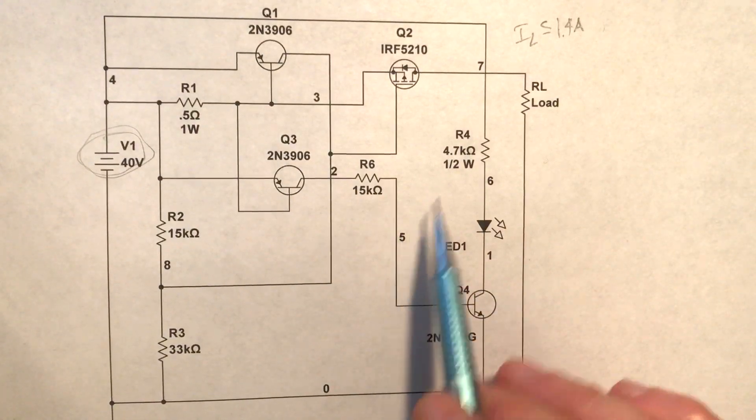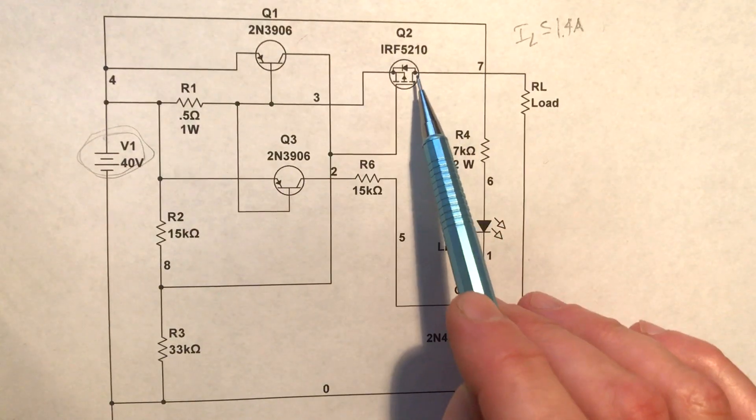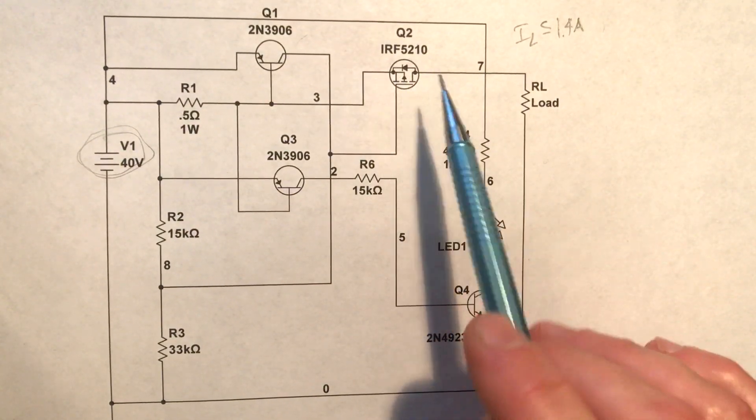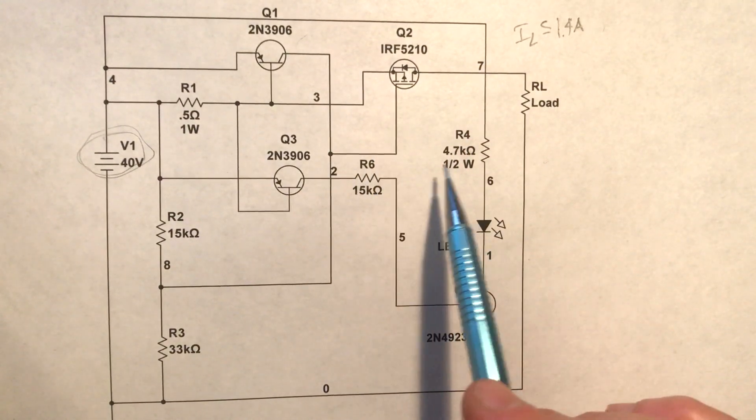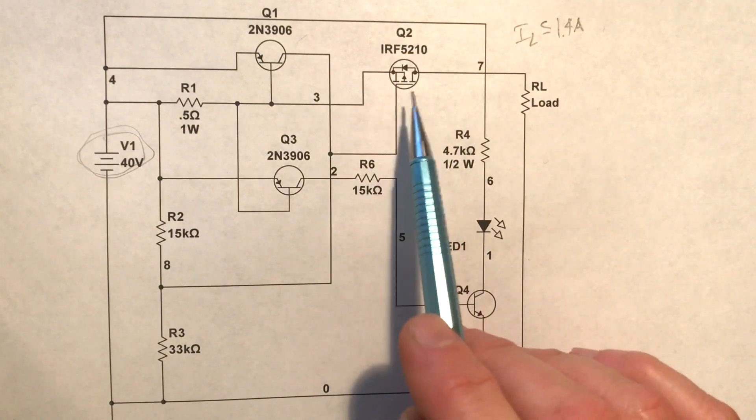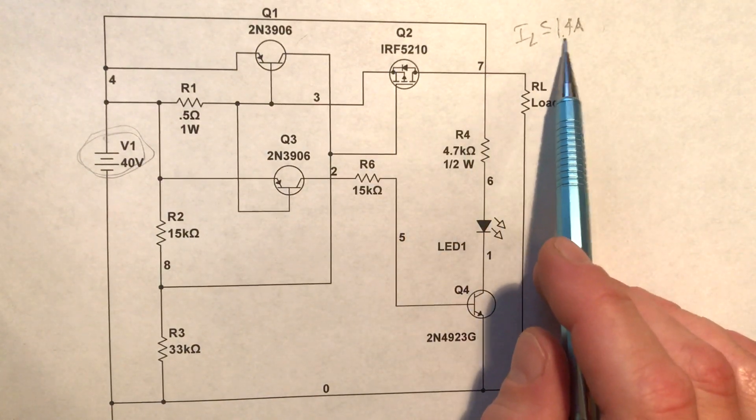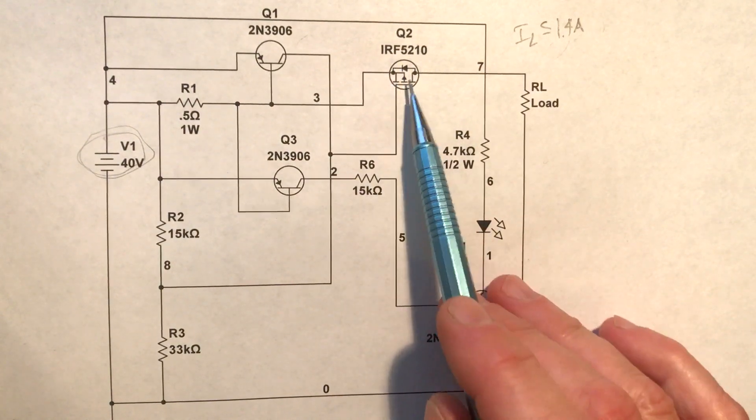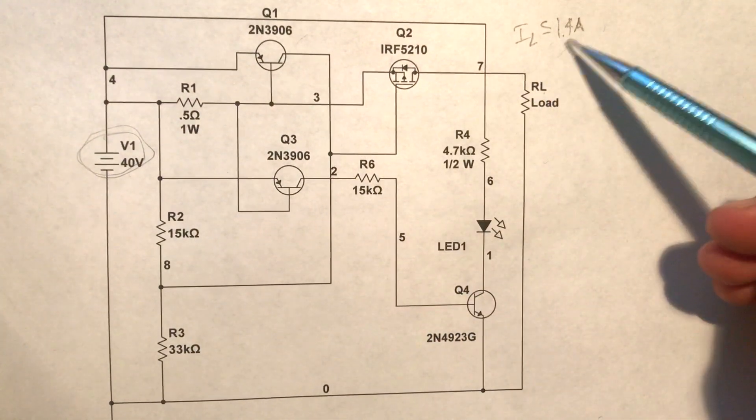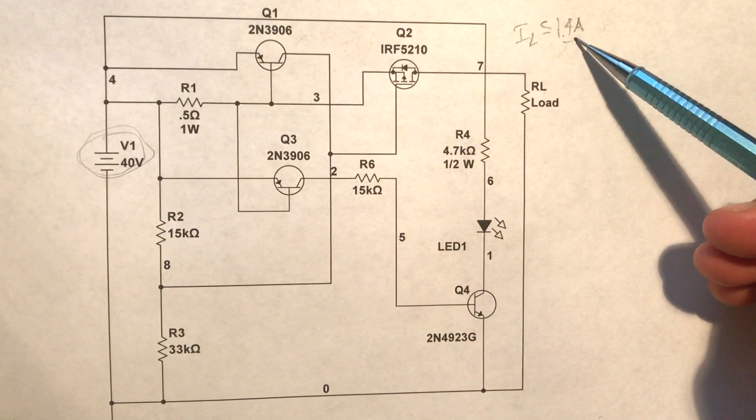Now the gist of this circuit is all centered around this MOSFET obviously. It's a p-channel MOSFET and I've got it operating as a voltage controlled resistance source. So given that, as the current starts to approach 1.4 amps and increases or goes beyond that value, this resistance is going to increase which will in turn decrease the voltage across this load and limit the current to approximately 1.4 amps.